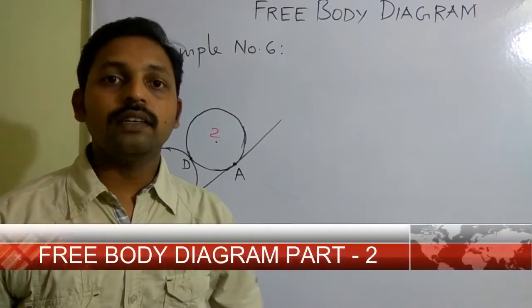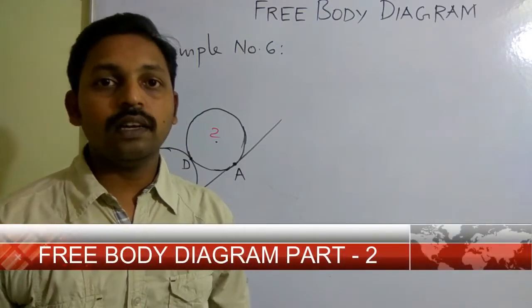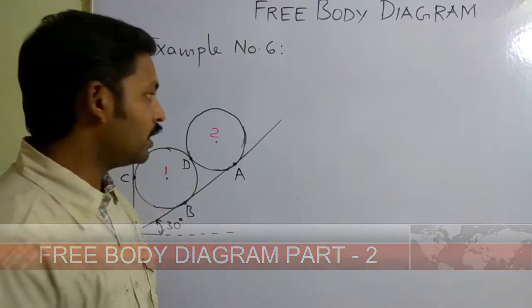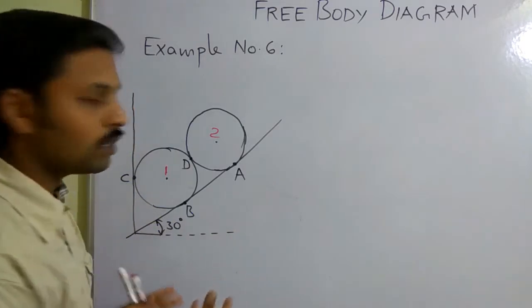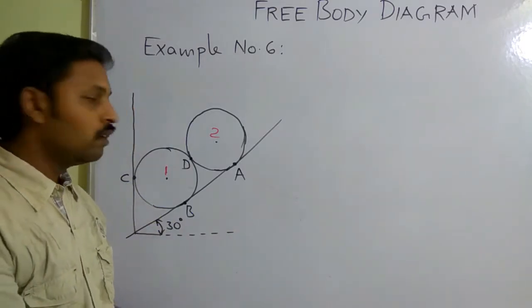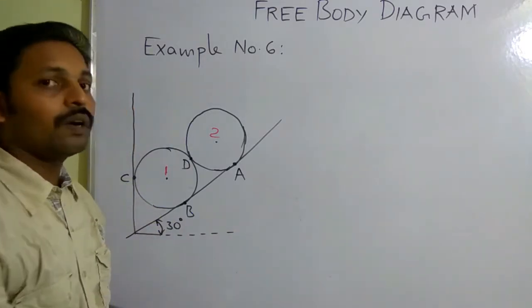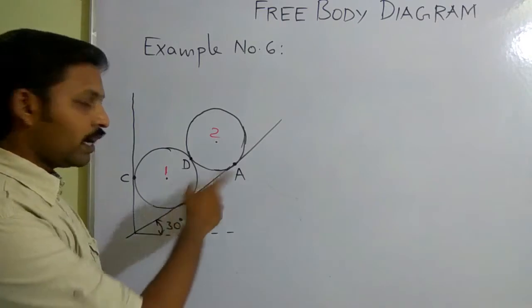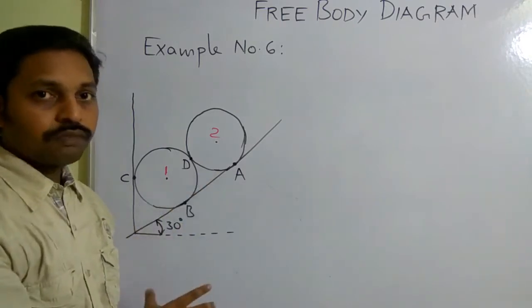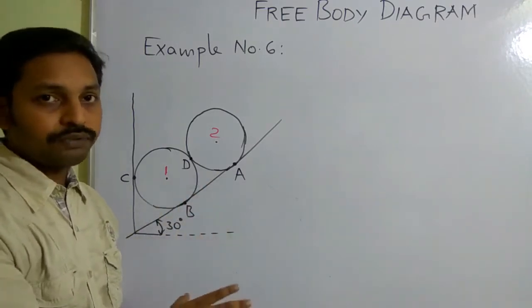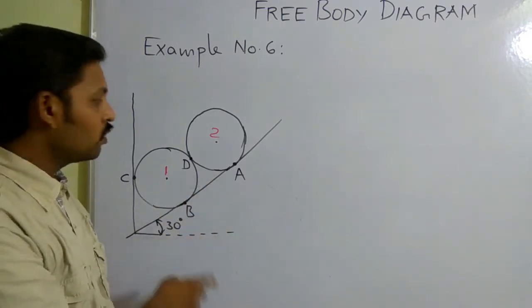Let me consider another example for explaining free body diagrams. This is the spatial diagram I have considered, and for this I want to draw the free body diagram. There are two rollers, and for these two rollers I want to draw the free body diagram.